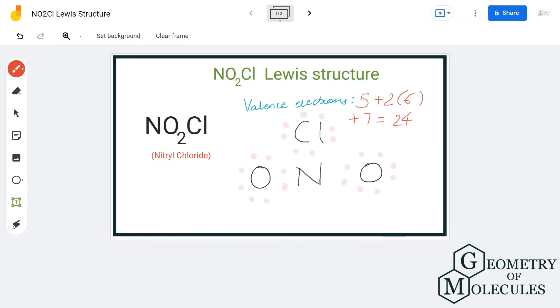Doing that we will have a complete octet for oxygen and chlorine atoms. However, nitrogen atom will just have six valence electrons. To help nitrogen atom have a complete octet, we are going to shift a pair of electrons from this oxygen atom in between this nitrogen and oxygen atom.